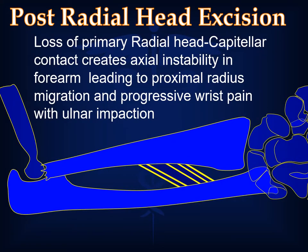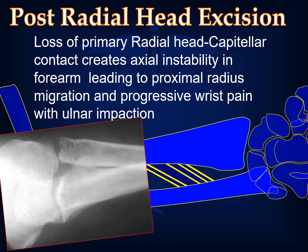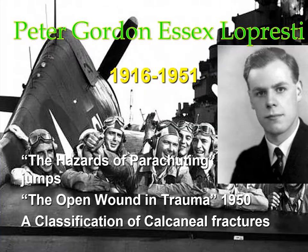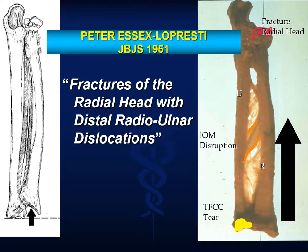Thus following radial head excision, loss of the radial head-capitellar contact creates axial instability in the forearm, leading to proximal radius migration and progressive wrist pain with ulnar impaction. Peter Gordon Essex-Lepresti, a British orthopedic trauma surgeon, described this injury pattern in a JBJS paper in 1951. At the time, he was more famous for his classification of calcaneal fractures and for defining a wound triage system founded from his World War II experiences. He died unexpectedly at age 35 from a heart attack while operating on a pelvic fracture. His colleagues posthumously published his report of two cases, forever associating his name with the injury pattern. Thus the eponym for radial head fracture with an associated distal ulnar joint injury and subsequent axial instability is called the Essex-Lepresti injury.